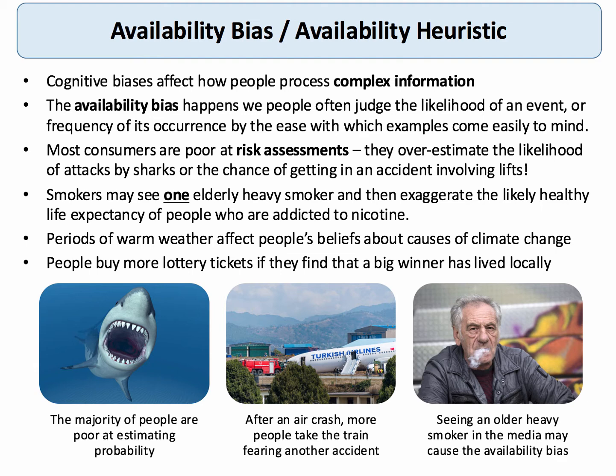You might see a smoker who has reached the age of 100 and is lauded in the newspaper for this fantastic achievement. As a result, because it comes easily to mind, you then overestimate the likelihood of somebody who smokes 40 a day living beyond the normal life expectancy. Periods of very warm weather or extreme weather have a great saliency and therefore affect people's beliefs and calculations about the effects of climate change.